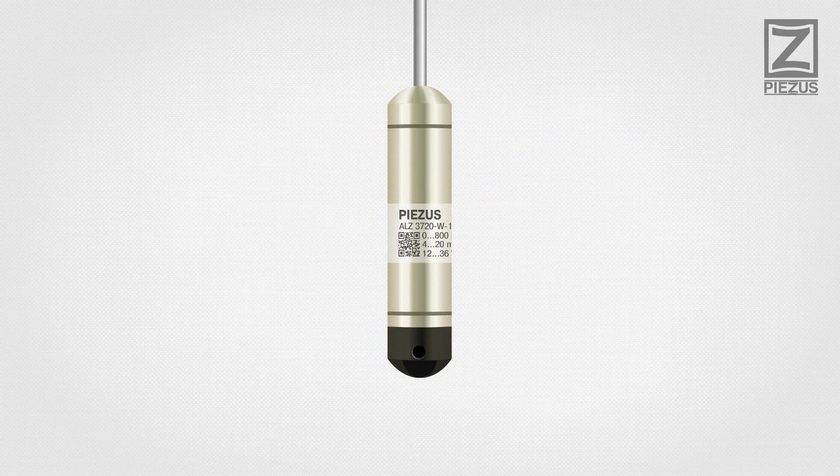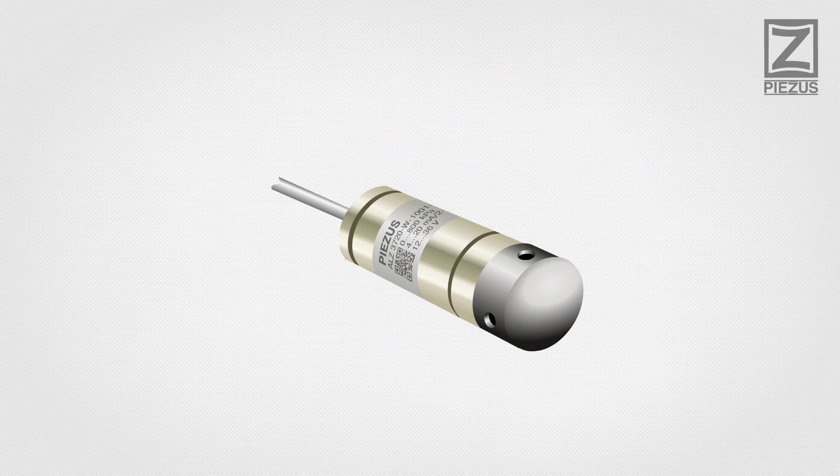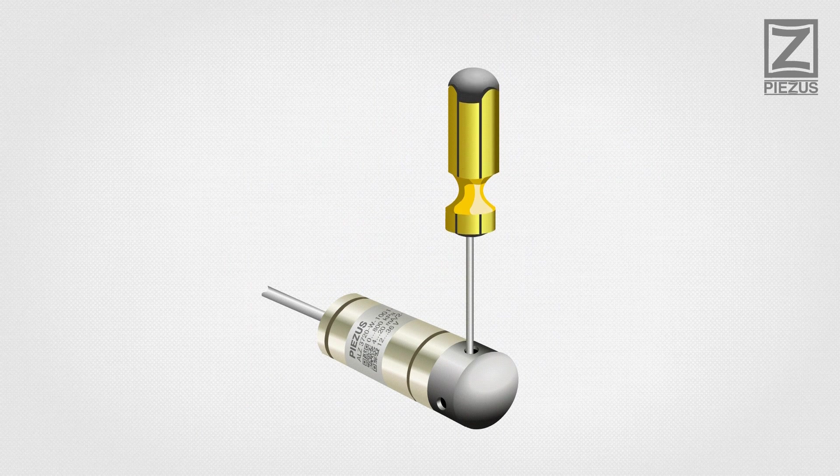Protective Cap is an optional component of the transmitter. The cap is removed for viscous medium and to clean the sensor. Use a screwdriver to remove the protective cap.